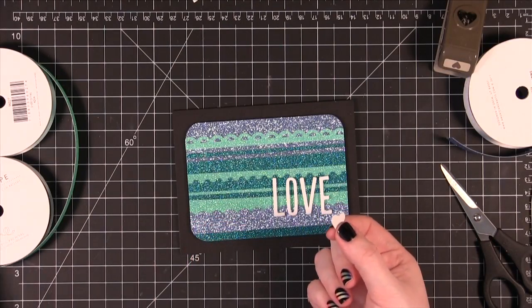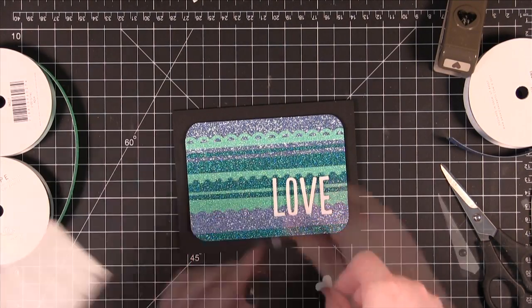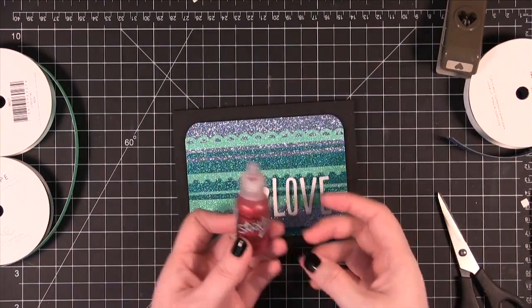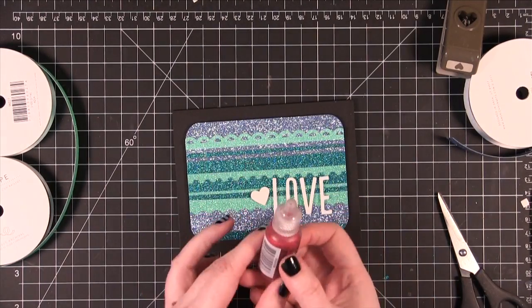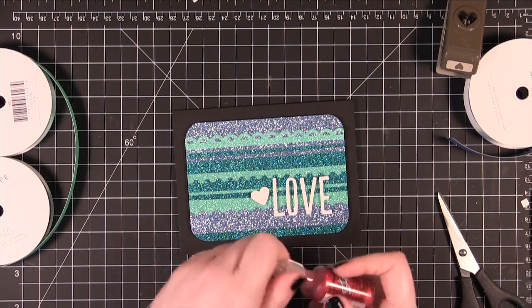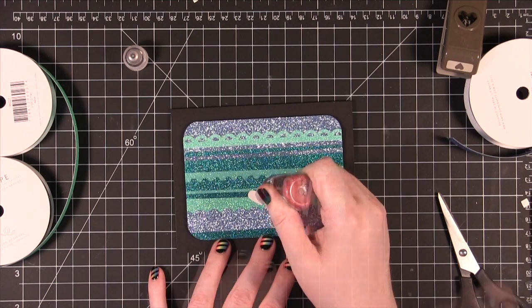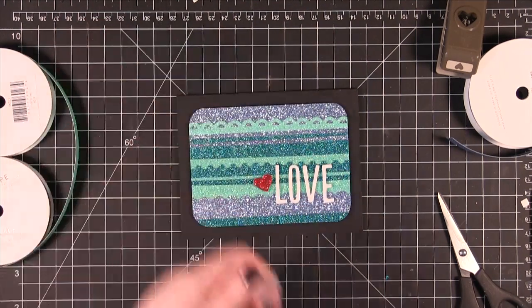Alright I'm going to put this little guy on some dimensional adhesive as well. I'm going to put him just kind of off to the side like that. And then I'm taking some Christmas Red, yes Christmas Red Stickles. And I'm going to cover the entire heart. Alright so we have that heart right there.